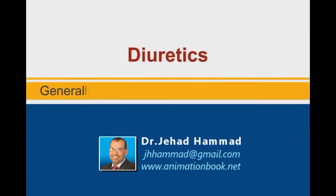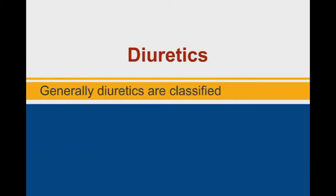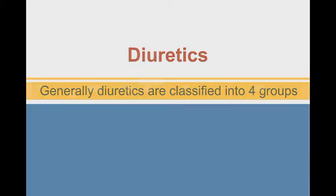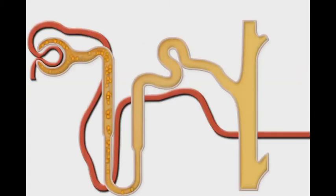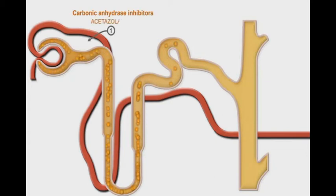Generally, diuretics are classified into four groups. Carbonic anhydrase inhibitors, such as acetazolamide, work on the proximal convoluted tubules.